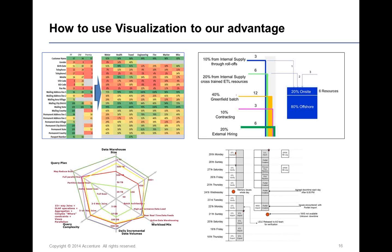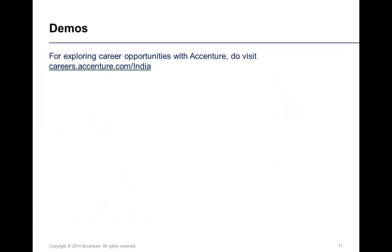Here are some examples where I've been using data visualization with simple tools like Excel — to show a data quality heat map, to show how I'm going to staff a project with resources and what the resource mix is going to be like, or to visually represent my project plan so that when I stand in front of the client I can show them the activities, how things are going, and if there are any hurdles. If you're an architect, you could also use data visualization to show database performance and bottlenecks in a very intuitive way that's easy for your teams or your management to understand.